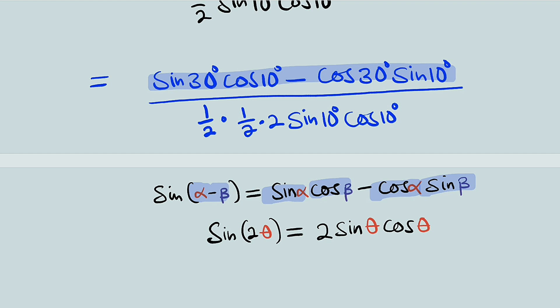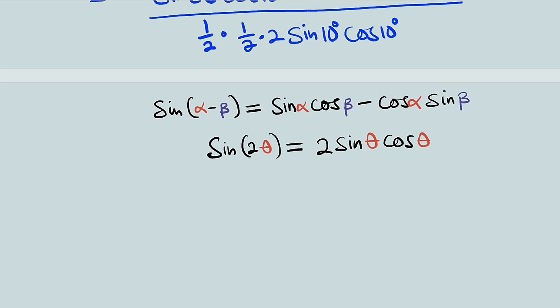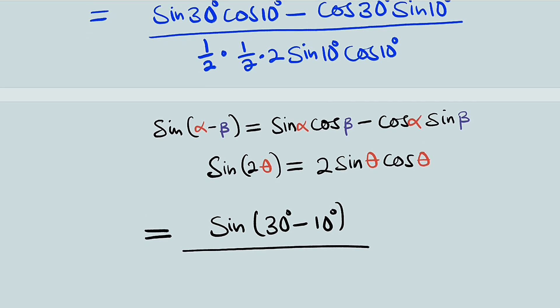Where alpha is equal to 30 and beta is equal to 10. So instead of the whole of this expression, we can replace it with sine of alpha minus beta, which is sine of 30 minus 10. Let me start with that one first. So this is equal to sine of 30 degrees minus 10 degrees to the top and to the bottom 1 over 2 times 1 over 2 is 1 over 4.